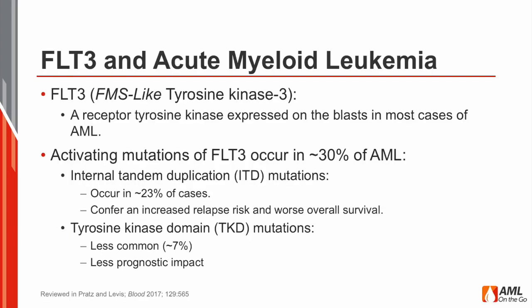First, a bit of background on FLT3 and AML. Anybody who takes care of AML patients knows about FLT3. This is a receptor tyrosine kinase expressed on the blasts in most cases of AML, and activating mutations of this receptor tyrosine kinase occur in a significant fraction of patients. The most common are the internal tandem duplication mutations, and less commonly the so-called tyrosine kinase domain mutations.